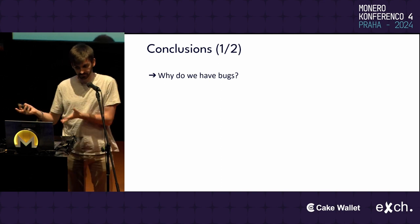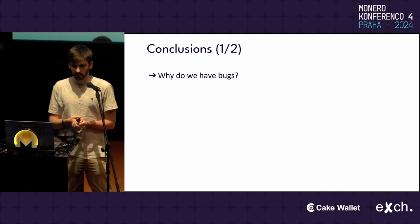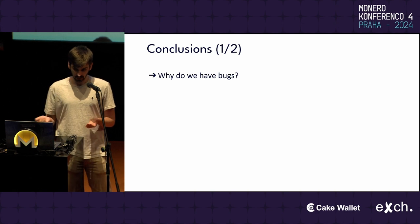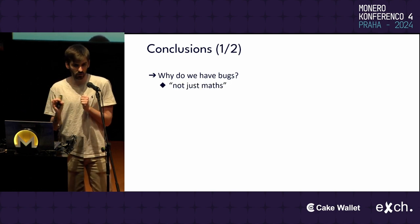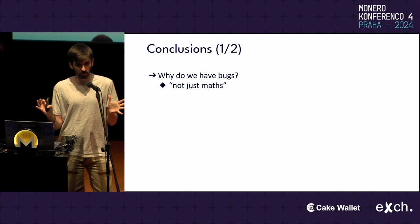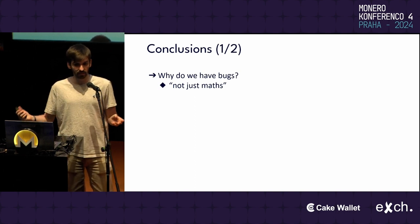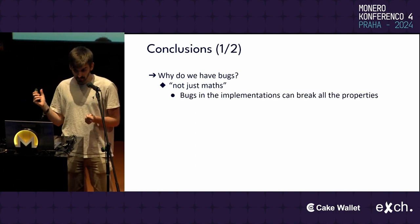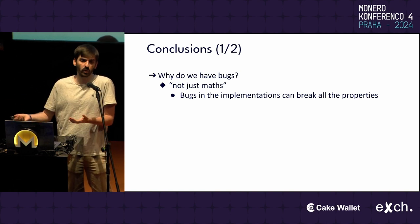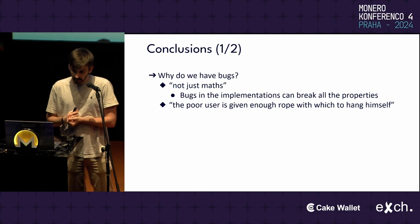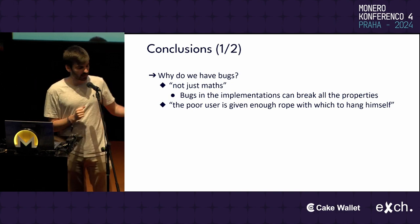In conclusion, why do we have bugs in systems using zero-knowledge proofs? First, zero-knowledge proofs are not just math — although they are based on very nice mathematics, there can be bugs in the implementation that can break all the properties of the systems. And the second reason...